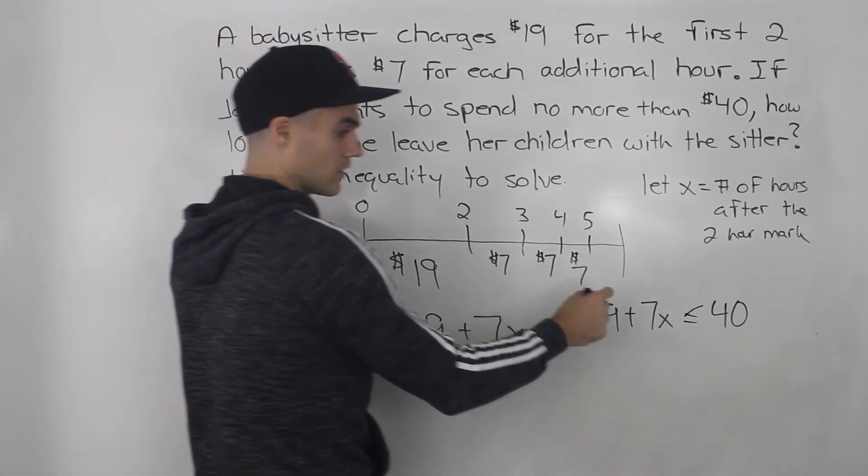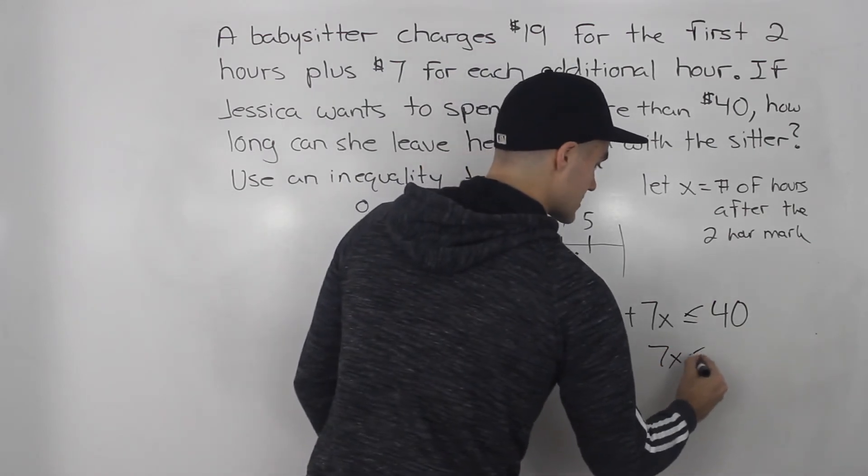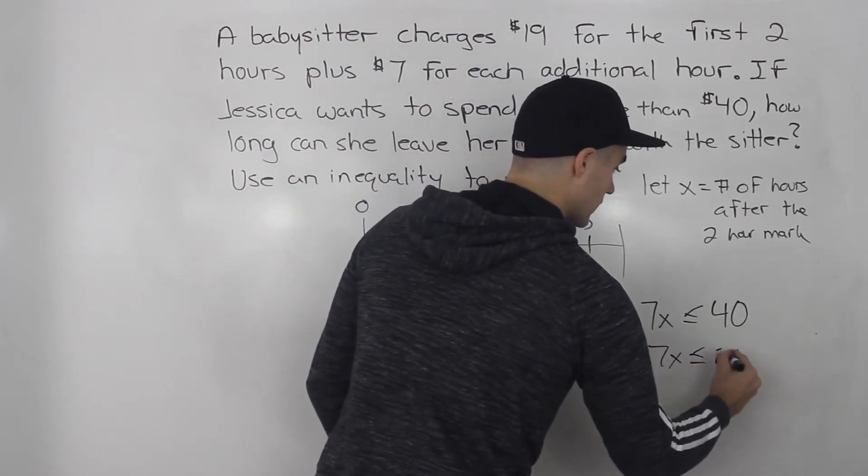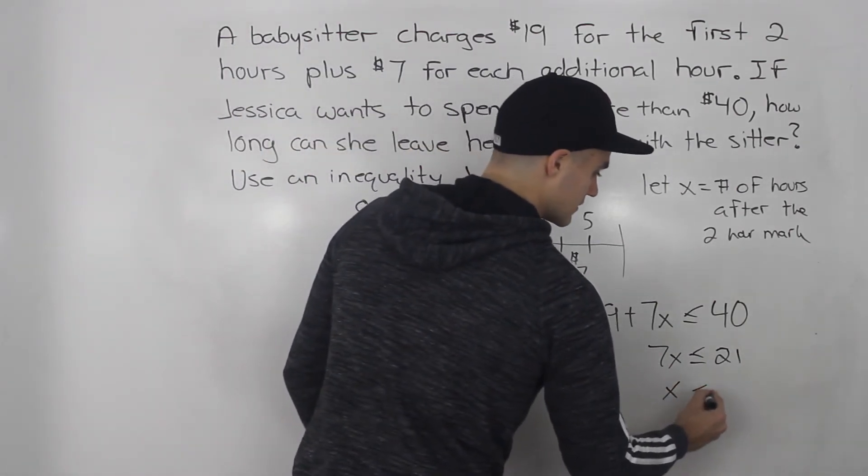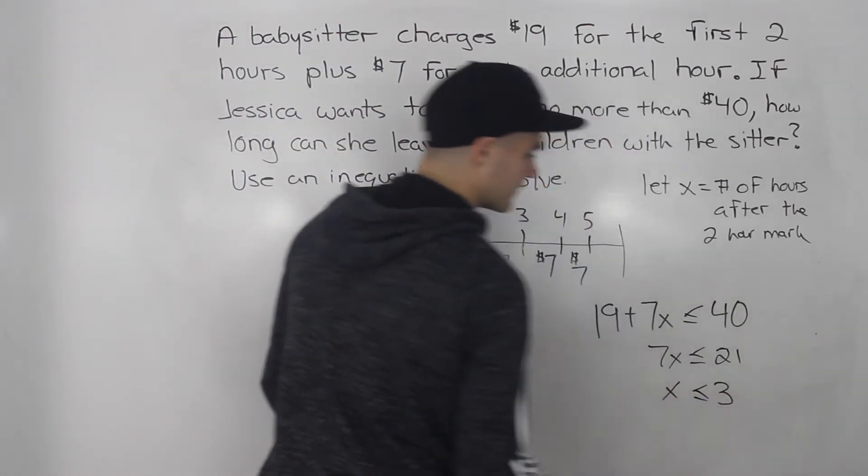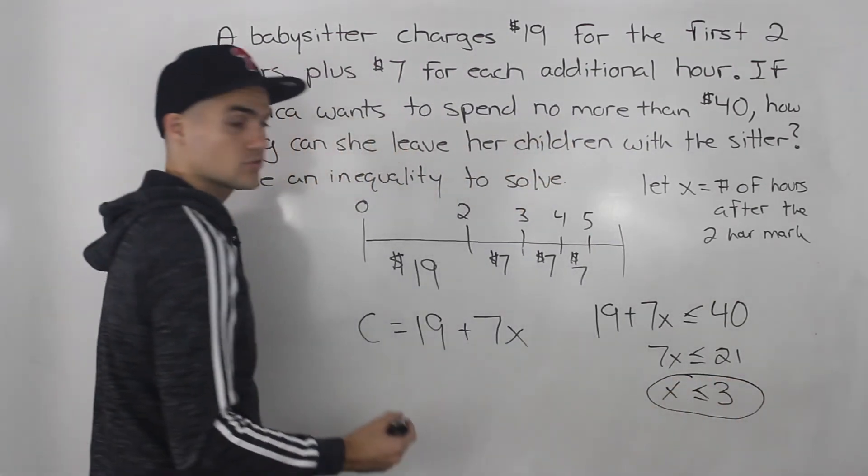Now solving this inequality, bring the 19 over. So we'll have 7X is less than or equal to 21, which is 40 minus 19. And isolating for X, we get three. So X has to be less than or equal to three.